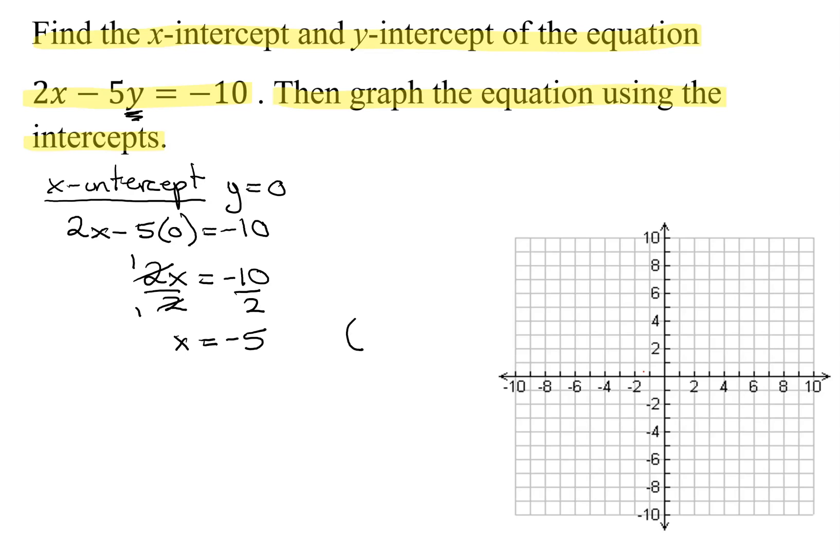Remember, intercepts are ordered pairs. So the x-coordinate is negative 5 and the y-coordinate is 0.